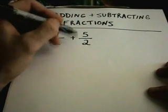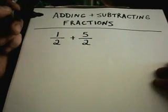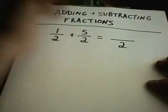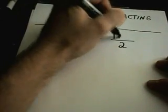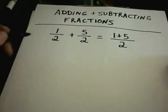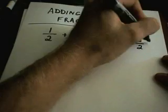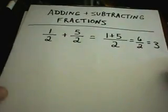So notice here I have 1 half plus 5 halves. I have the exact same denominator. When you have common denominators, the arithmetic occurs in the numerator. So in this case I'll get 1 plus 5, which is 6 over 2, and 6 divided by 2 is 3.